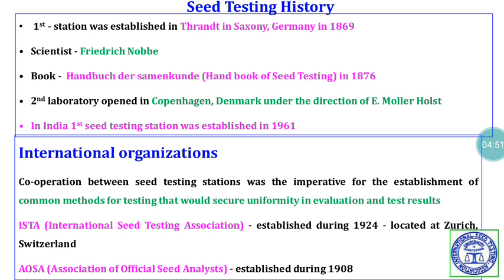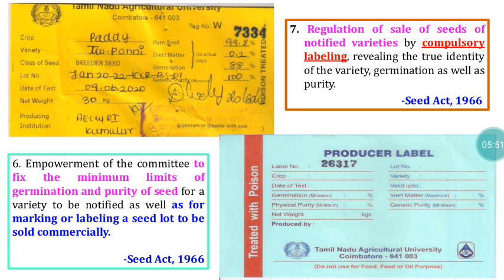ISTA is working for the development of seed quality testing protocols. Their main motto is to achieve uniformity in seed quality testing across the globe. They have different committees, and each committee is actively involved in developing protocols for assessing seed quality parameters. Whatever protocols they develop are given to other countries for adoption. Apart from ISTA, AOSA — the Association of Official Seed Analysts — was also established in 1908 and works for development of seed testing protocols.